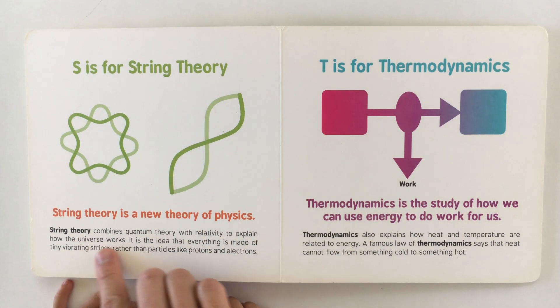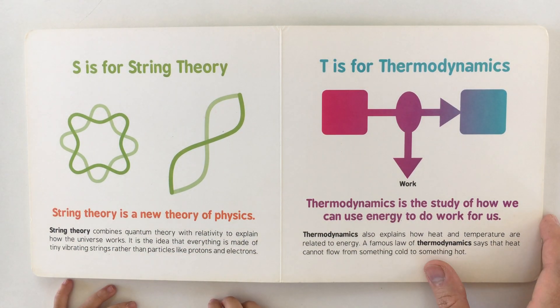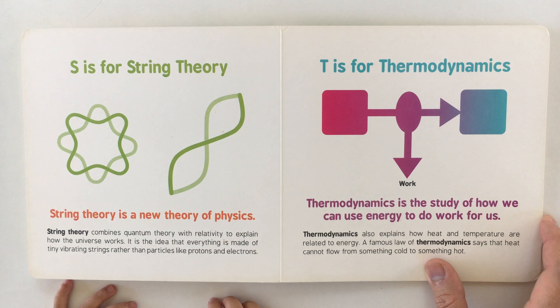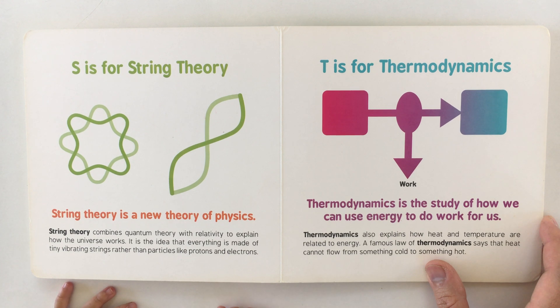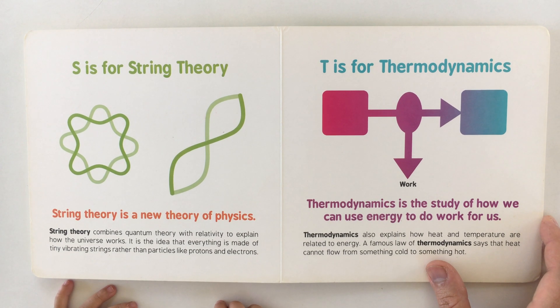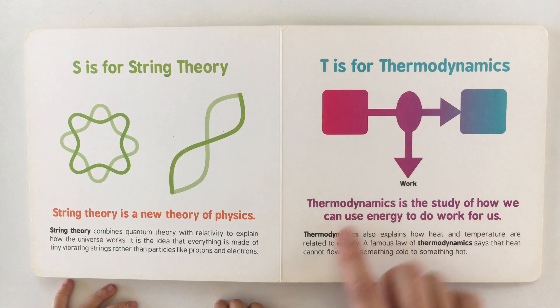S is for string theory. String theory is a new theory of physics that combines quantum theory with relativity to explain how the universe works. It is the idea that everything is made of tiny vibrating strings rather than particles like protons and electrons.